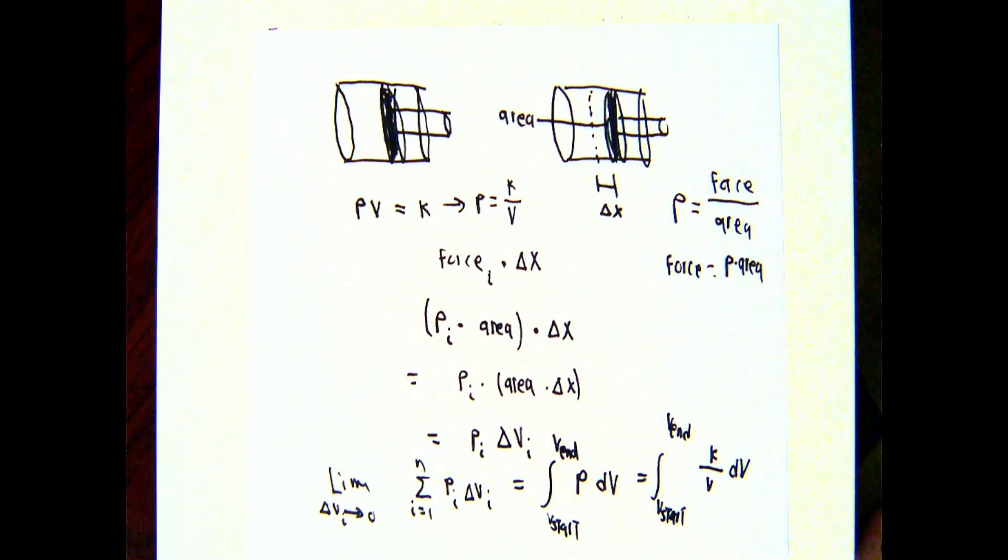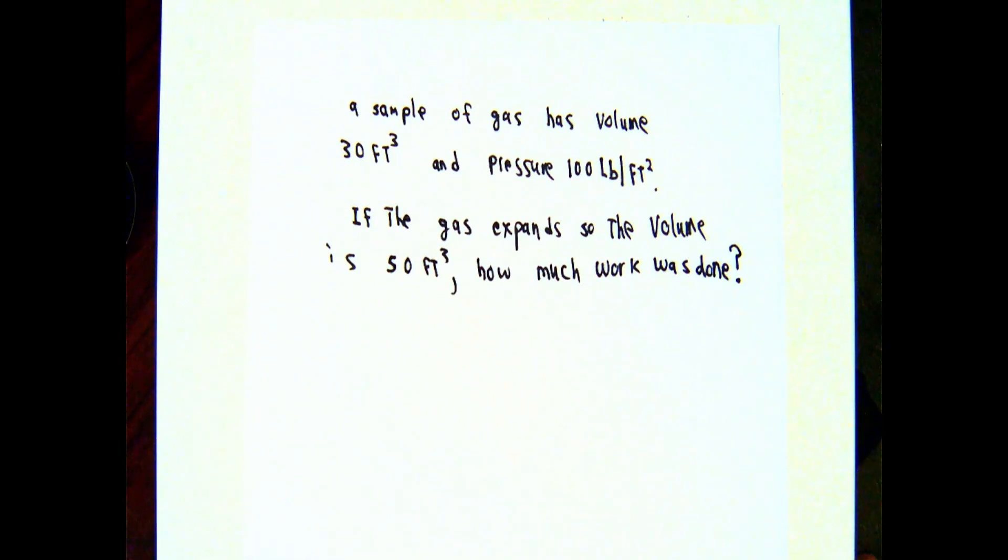Just like in all these other kinds of problems, I'm going to need to know the value of that constant k to get a number out of this. As a typical problem of this nature, let's say you have a sample of gas, and it has volume 30 cubic feet and pressure 100 pounds per square foot. If the gas expands so that the volume ends up being 50 cubic feet, how much work was done? The meaning of that sentence before the question is just like the meaning in Hooke's law or Newton's law of gravity. It's going to let me figure out what the constant is.